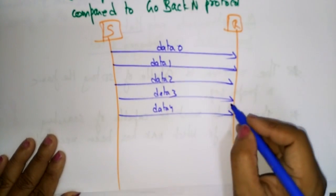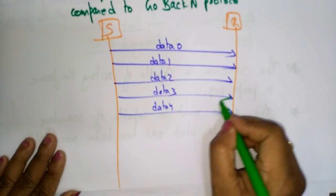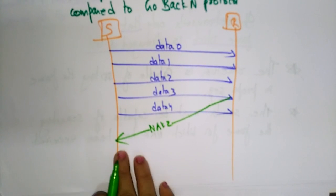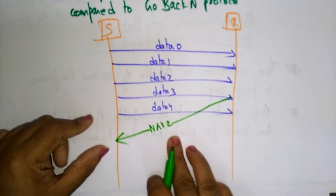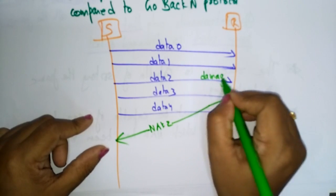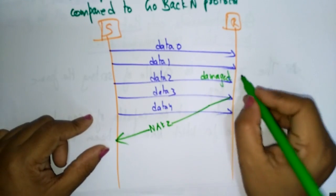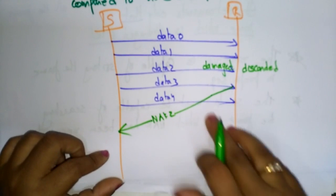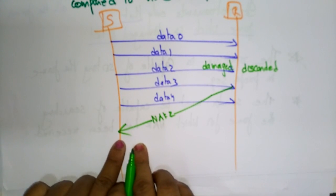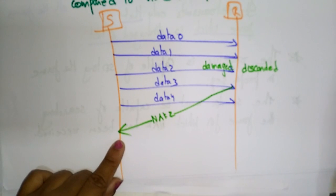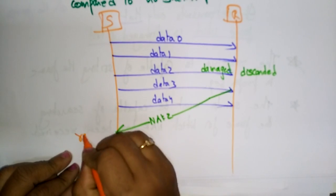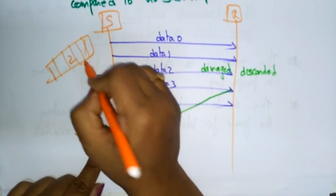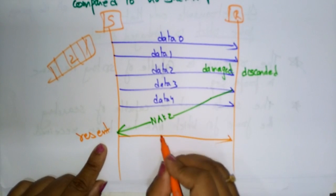At one point, I receive a negative acknowledgement 2. As the sender, receiving NAK 2 means frame 2 was damaged. So when it is damaged, only data 2 is discarded — not all the frames, only data 2 is discarded. Whenever I see negative acknowledgement 2, I retransmit only data 2. I check the buffer, find data 2, and retransmit only that frame.